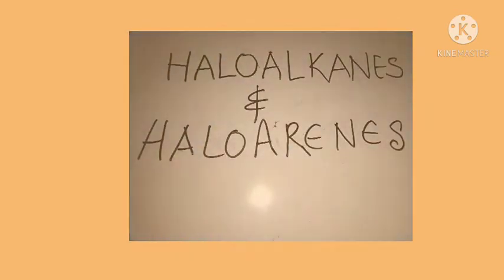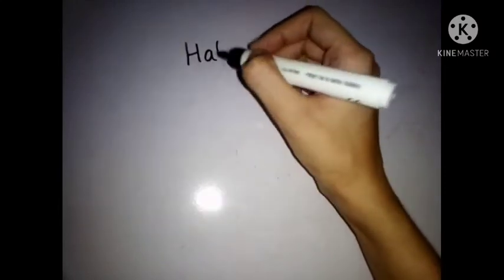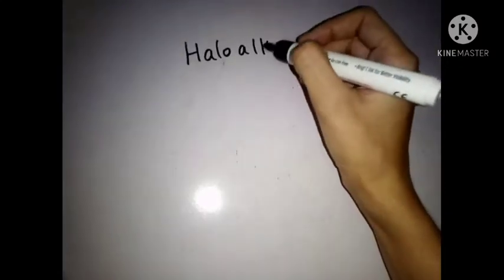So without wasting our time, let us see what are haloalkanes and haloarenes. Haloalkanes is made up of two words: halo and alkane.